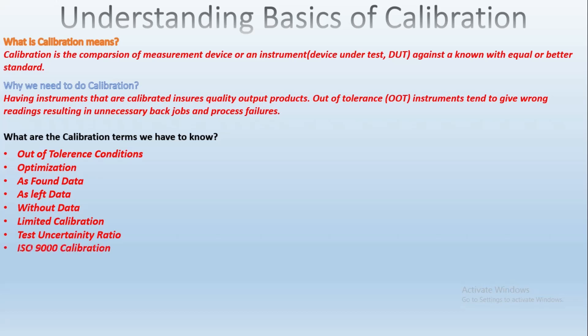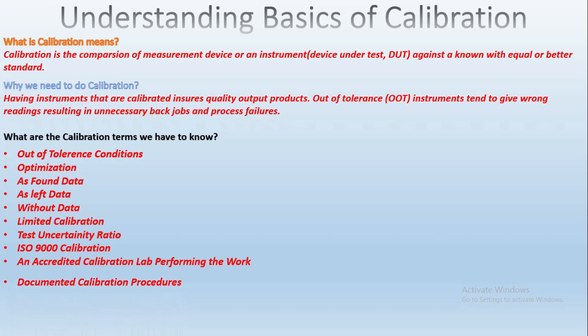The next term is ISO 9000 calibration. ISO 9000 calibrations are crucial for many industries. The following is required for ISO 9000 compliant calibrations. First is an accredited lab: the calibration laboratory employed to perform the calibration must be an ISO 9001:2000 accredited lab, or be the original equipment manufacturer.